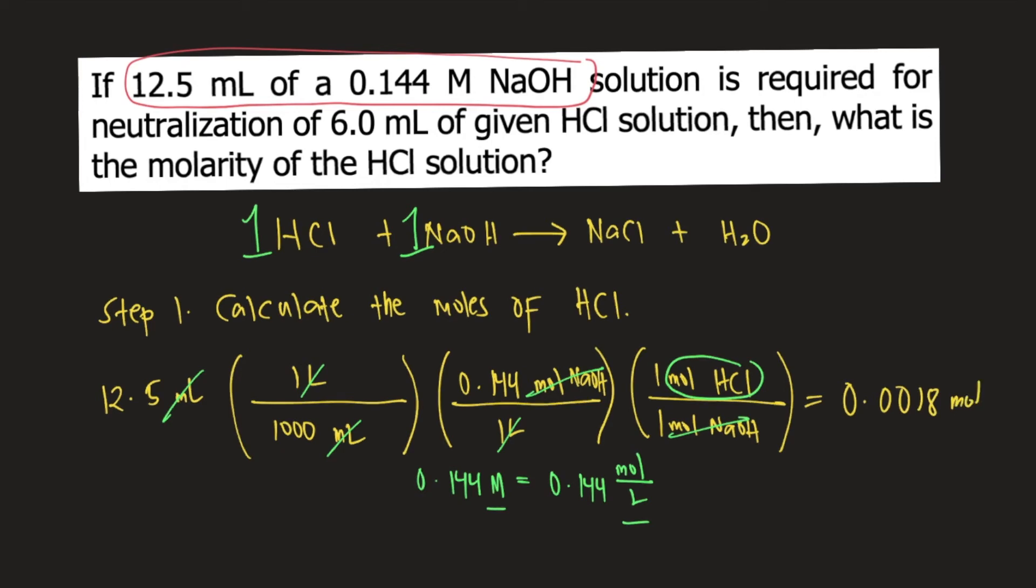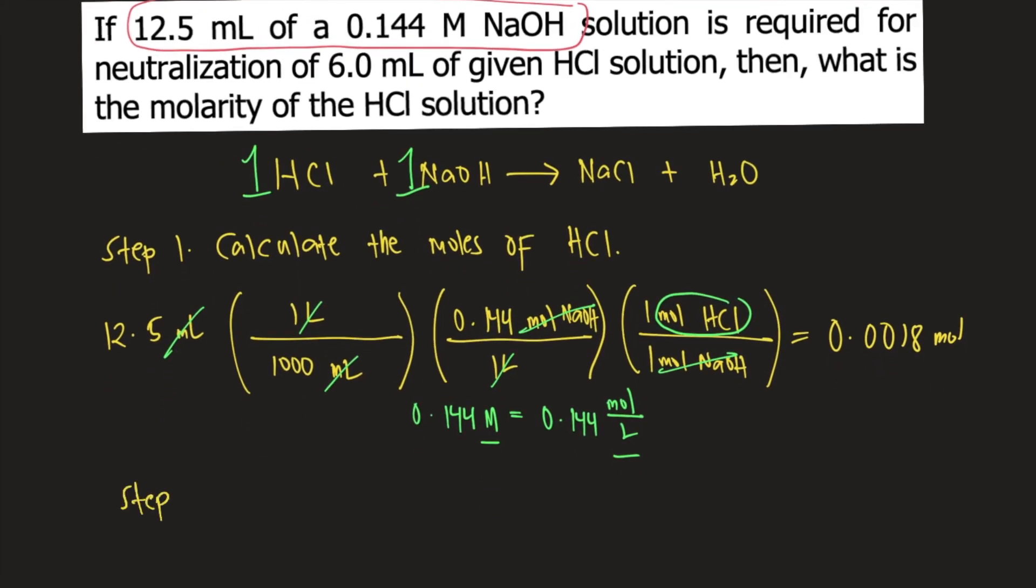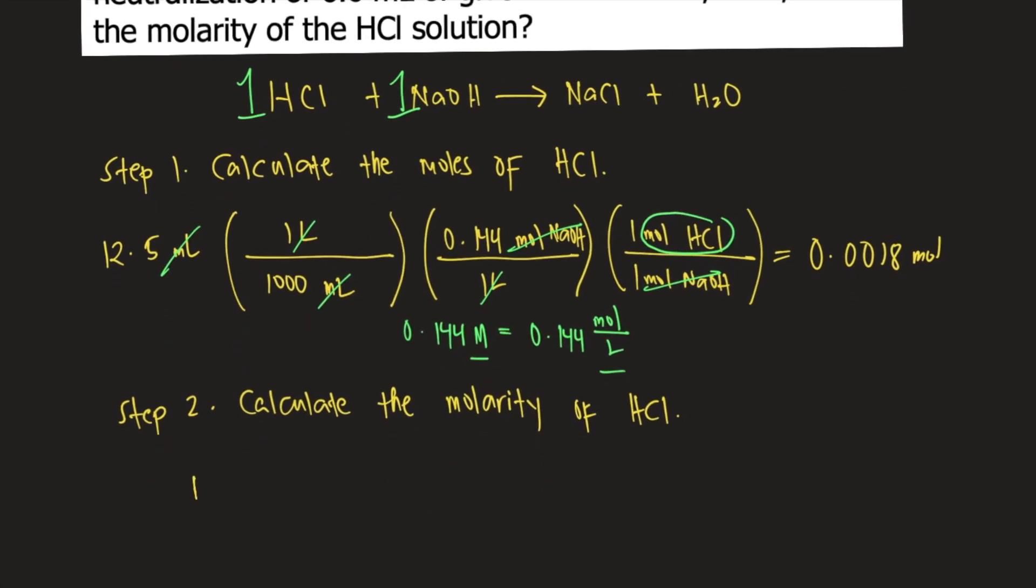Then let's proceed to step 2. Step 2 would be to calculate the molarity of HCl. So we know that the formula for molarity is moles per liter. According to step 1, the moles of HCl is 0.0018 moles.